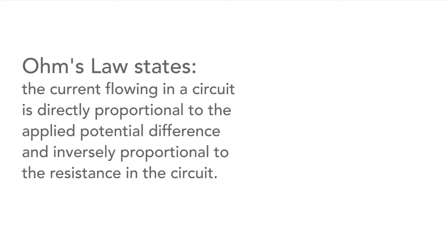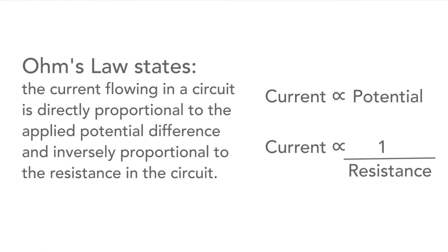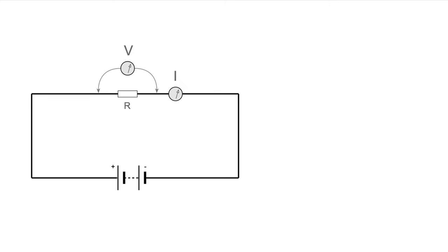Ohm's law states that the current flowing in the circuit is directly proportional to the applied potential difference, and inversely proportional to the resistance in the circuit. This is quite a lot to take in on its own, but it means that by doubling the voltage across a linear circuit such as a resistor, the current will also double. However, if the resistance is doubled, the current will fall by half.